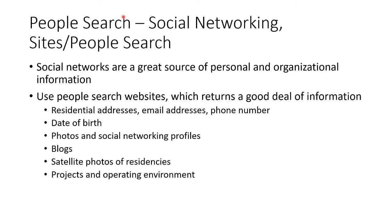Of course, do people searches, because people are the weakest link. Social networks are a great source of information because people will leak out what's going on. You can get people's residential addresses, email addresses, phone numbers, and date of birth. You can get photos, social networking profiles, read their blogs, look at satellite photos of residences, and see their projects and operating environment. You might read that a company is short on IT people, or they're talking about a new technology they're going to deploy — and you think, 'Possible target.'